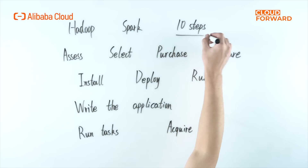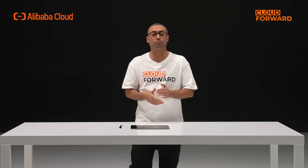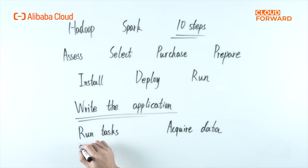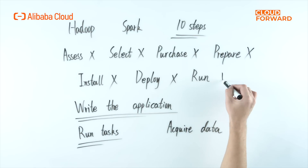Normally, when we deal with distributed processing systems such as Hadoop and Spark, users need to complete a total of 10 steps to work. There are seven steps of preparation: assess business characteristics, select machine types, purchase machines, prepare hardware environments, install operating systems, then finally deploy Hadoop or Spark and run the cluster — followed by three steps of real importance: write the application, run tasks, and acquire data. The final three steps are clearly relevant to the user's application logic, whereas the seven steps of preparation are nothing but long, tedious, and boring standard procedures.